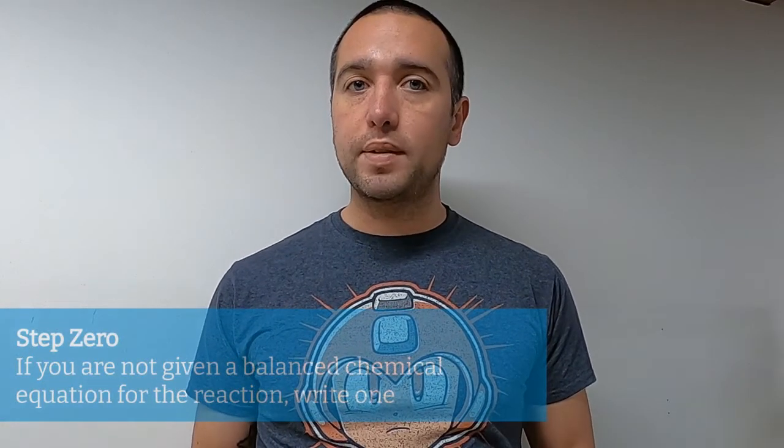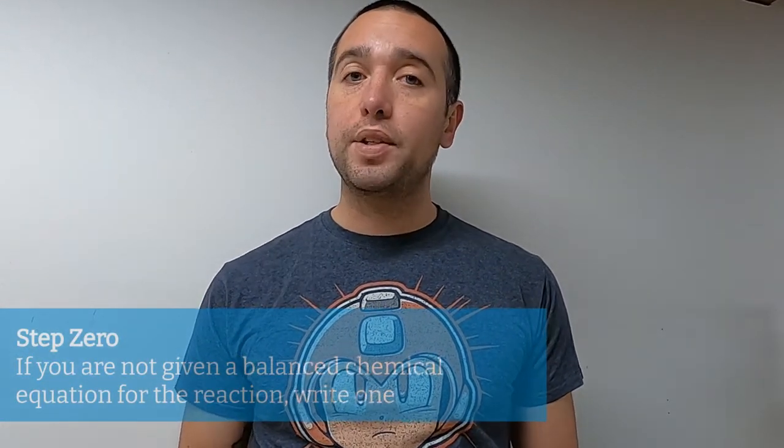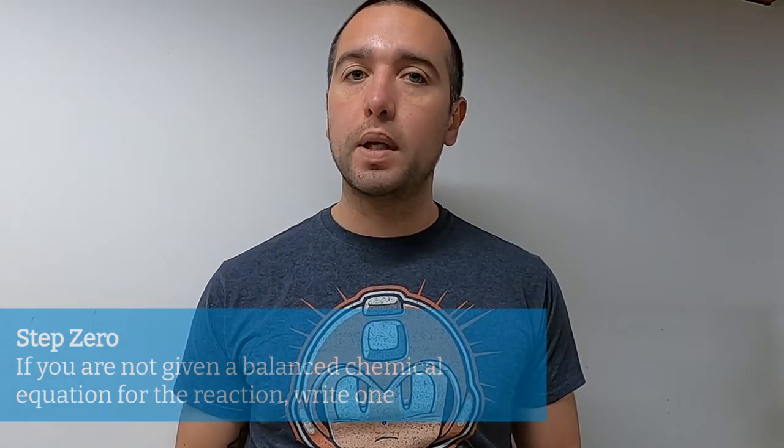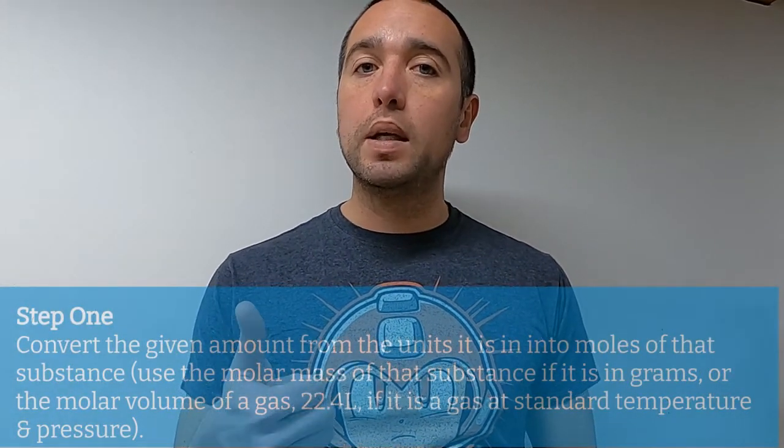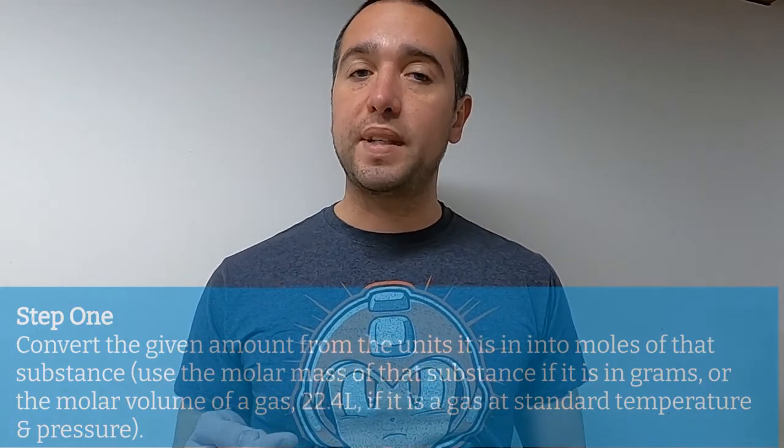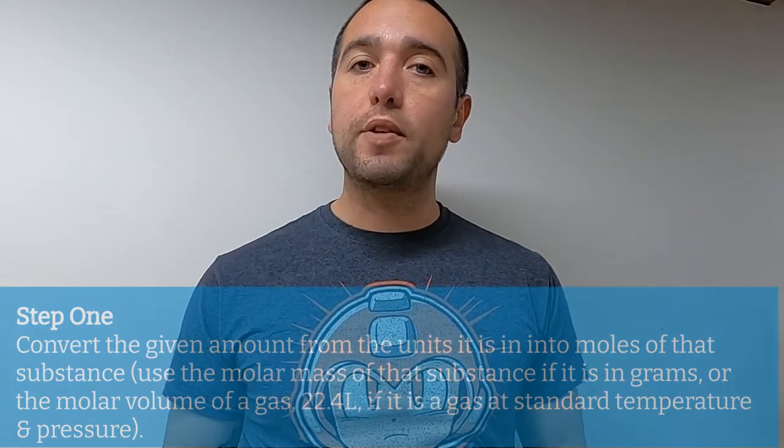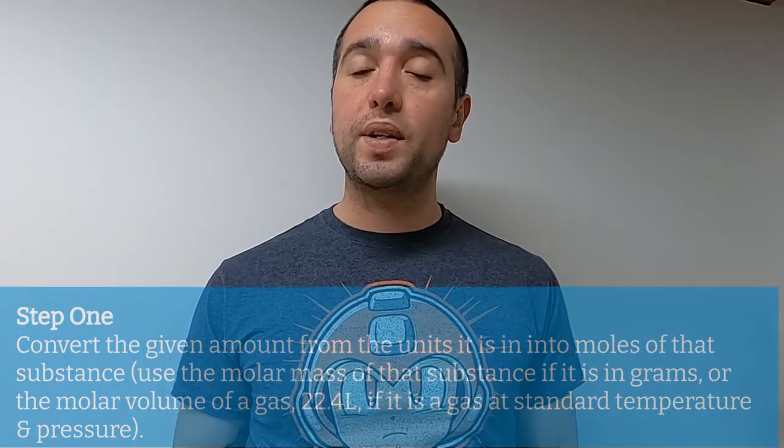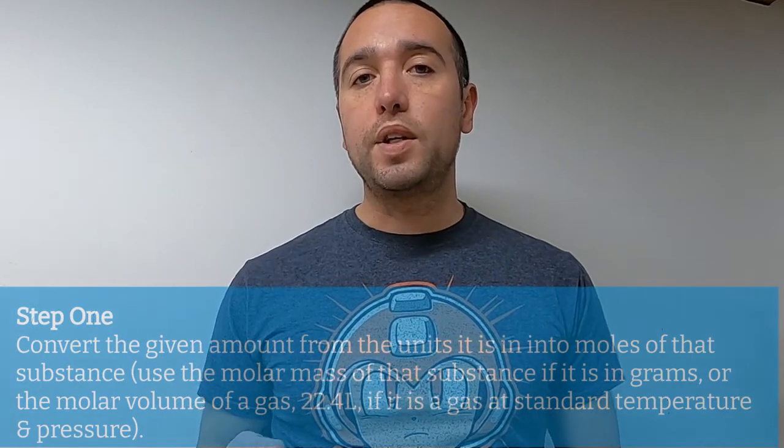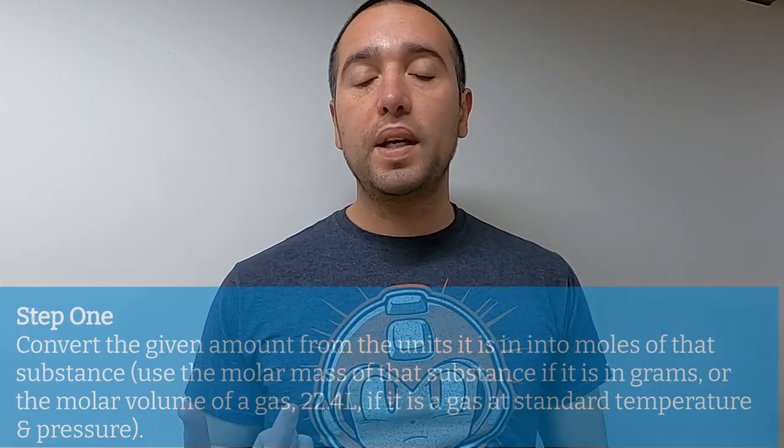So step one, well step zero really is, if you don't have a balanced chemical equation for the reaction, to write one, to develop one. So step one, once you have a balanced chemical equation, is to take the given substance, whatever units it's in, it might be grams, or it might be liters if it's a gas, you're going to convert that substance into moles. So step one is to convert the units of your given substance into moles.